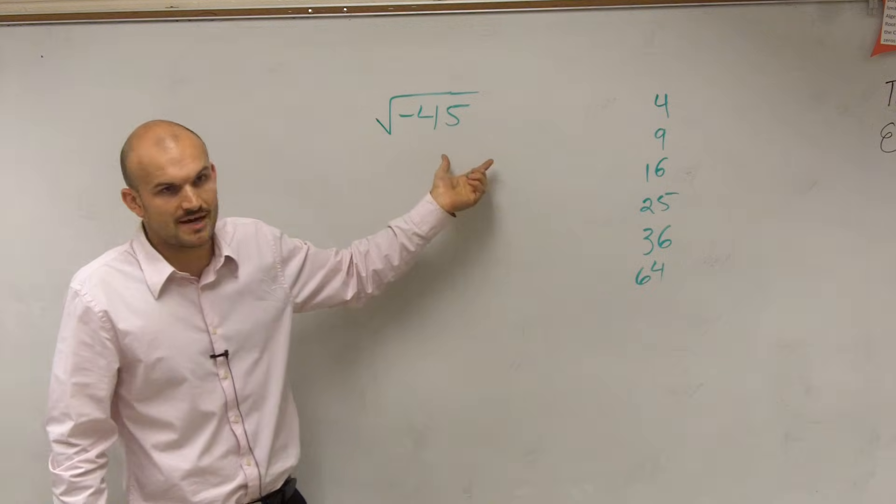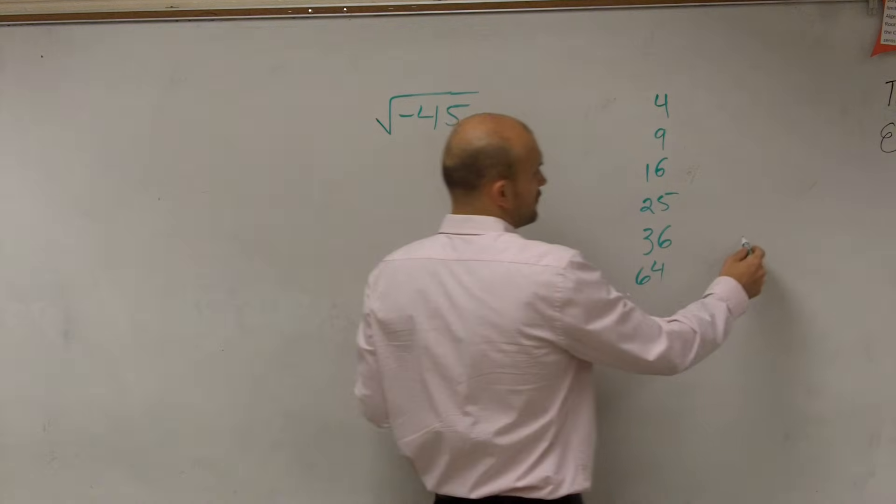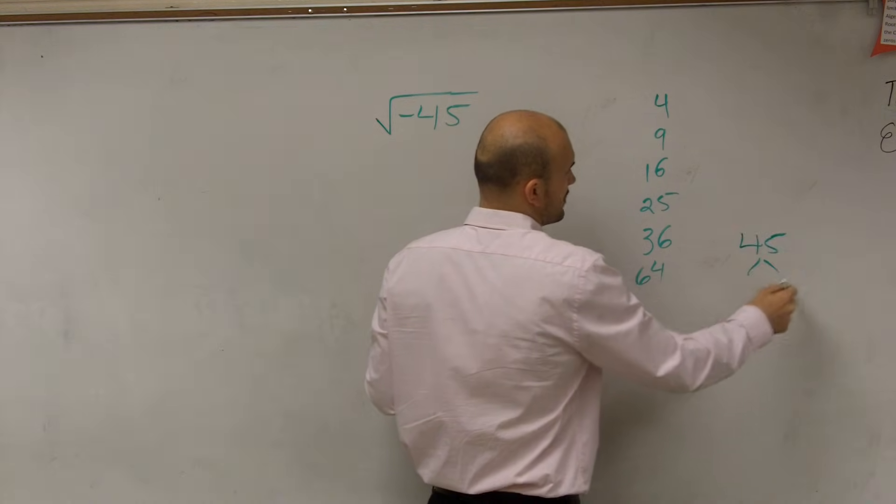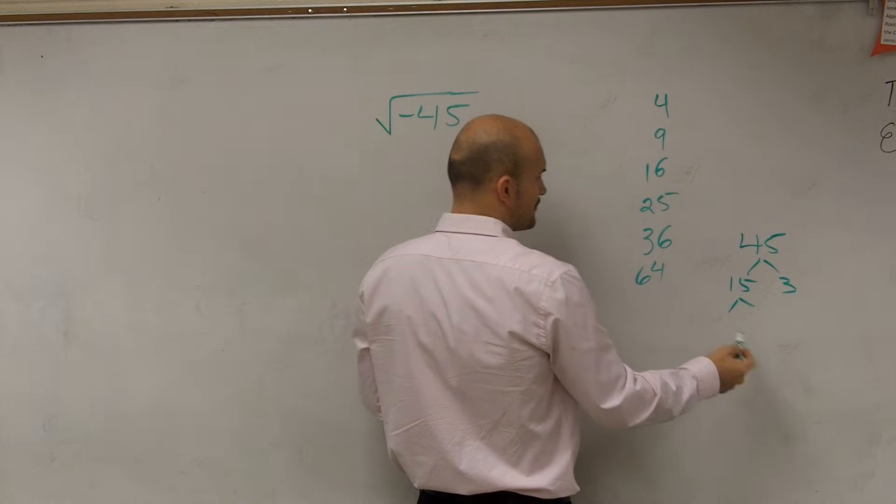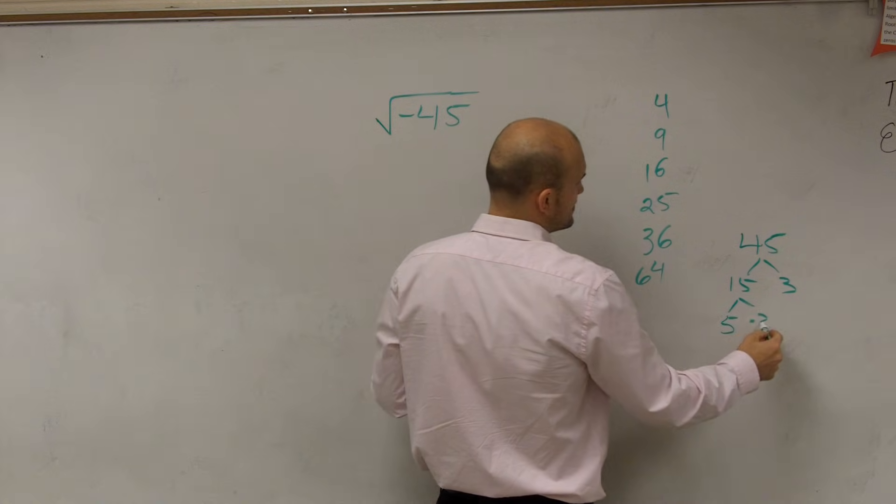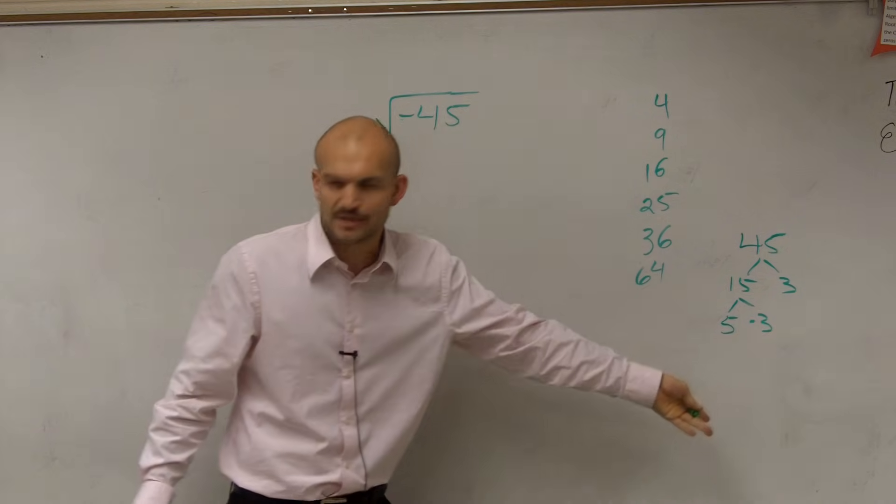So you're going to want to factor 45. You can factor 45 many different ways, right? You can do the factor tree: 15 times 3, then 5 times 3, and so forth. You can use the factor tree to factor it.